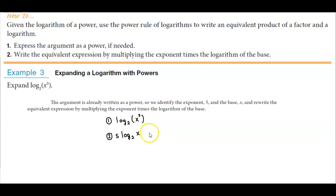So the power rule tells us of logarithms that we can factor out the five and then multiply it by the entire logarithm. So now it becomes five times the log of base two of x.